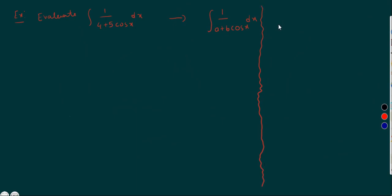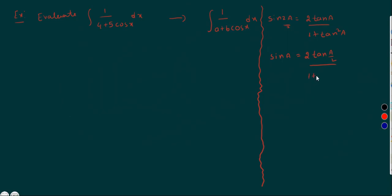Before the solution, I want some formulas. The sine 2a formula in terms of tan: sin(2a) = 2 tan(a) by (1 plus tan square a). The sub-multiple formula: sin(a) equals 2 tan(a/2) by (1 plus tan square(a/2)). This is the sub-multiple formula of sine a.